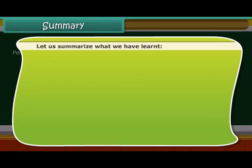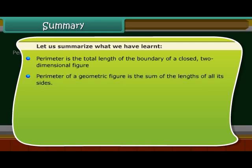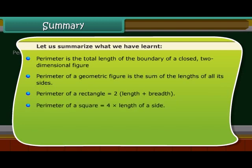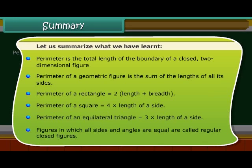Let us summarize what we have learned. Perimeter is the total length of the boundary of a closed two-dimensional figure. The perimeter of a geometric figure is the sum of the lengths of all its sides. The perimeter of a rectangle is 2 into (length plus breadth). The perimeter of a square is 4 into the length of a side. The perimeter of an equilateral triangle is 3 into the length of a side. Figures in which all sides and angles are equal are called regular closed figures.